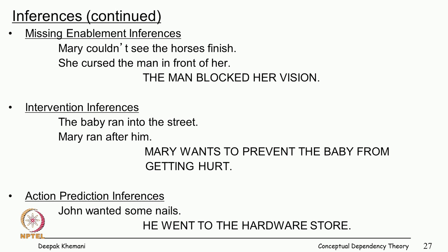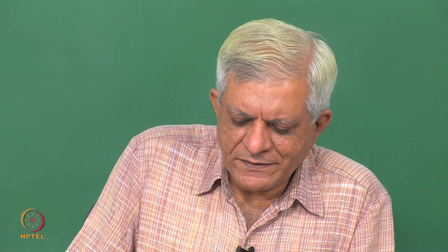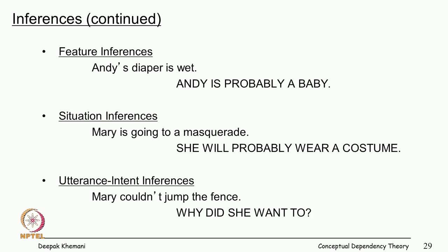Intervention inferences: 'The baby ran into the street, Mary ran after him' — because she does not want the baby to get hurt. Action prediction inferences: 'John wanted some nails, he went to the hardware store.' Knowledge propagation inferences: 'Pete told Bill that Mary hit John with a bat' — so Bill knows that John has been hit. Normative inferences: 'Does Pete have a gallbladder? Very likely.' 'John saw Mary at the beach Tuesday morning — why was she not at work?' State duration inferences: 'John handed a book to Mary yesterday — is Mary still holding it? Probably not.' You need world knowledge to say you do not keep holding a book all the time.